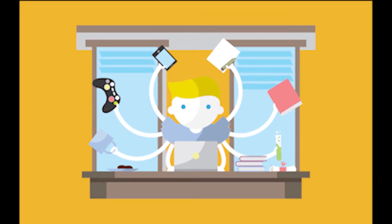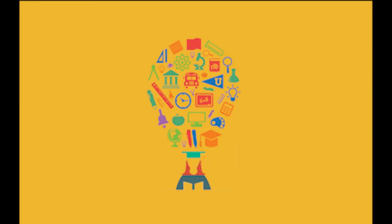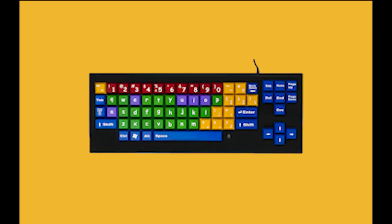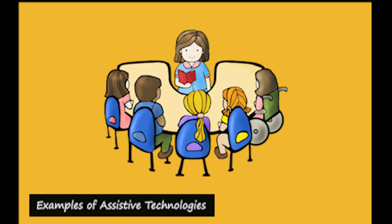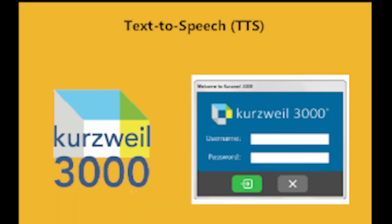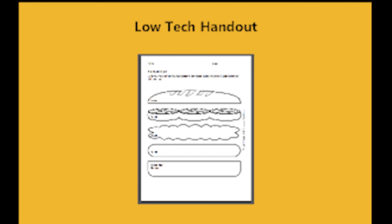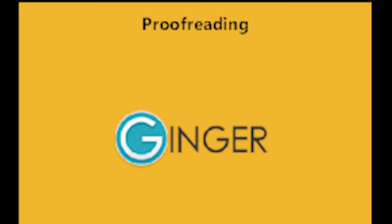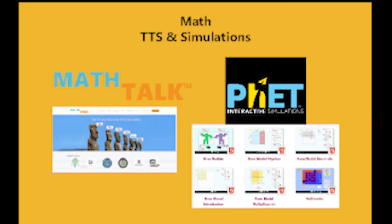And alternatives for students' physical interaction with learning materials, whether by touch, speech, a button, a controller, keyboard, or adapted keyboard. Examples of assistive technologies used in classrooms include text-to-speech tools, listening systems, low-tech handouts, sip-and-puff systems, proofreading software, and assistive math tools.